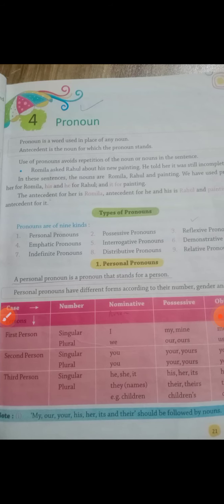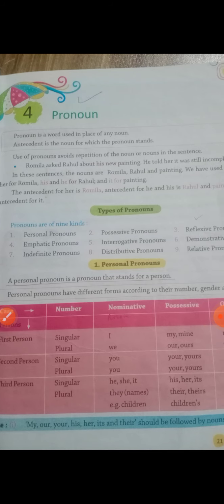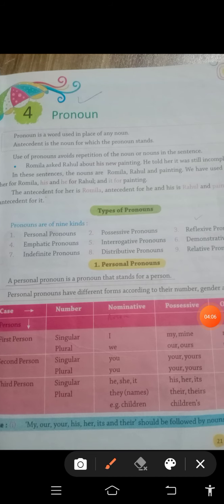Example: 'Romila asked Rahul about his new painting. He told her it was still incomplete.' In these sentences, noun kya kya hai is particular sentence mein? Romila — kis type ka noun hai? Proper noun. Rahul kya ho gaya? Proper noun. And painting — painting bhi kya hai? A type of noun. Now, we have used pronoun 'her' for Romila. Romila ke liye hamne second part of sentence mein kya istemal kiya? Her.